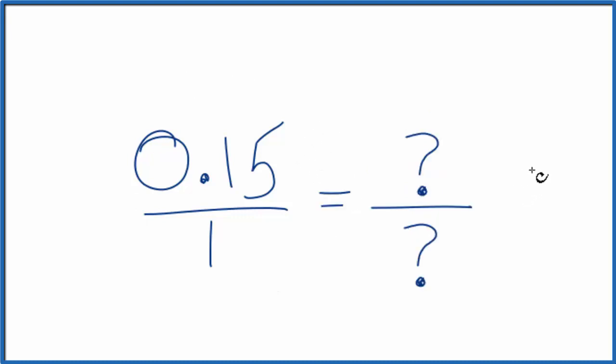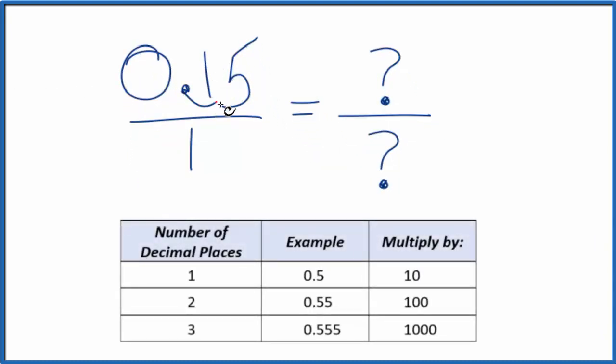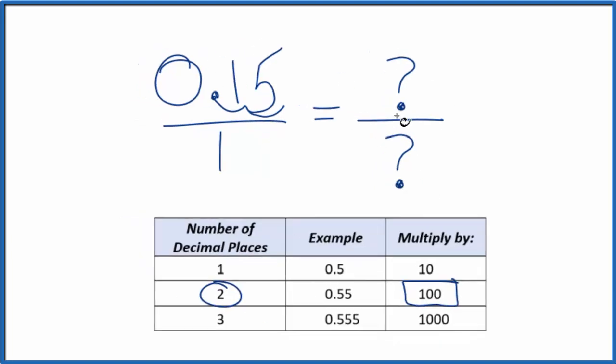What would be helpful is if we could get this 0.15 to a whole number. And here's how we do it. We have two decimal places, 1, 2. So when we have two decimal places, we're going to multiply it by 100. And that's going to get the whole number for us.